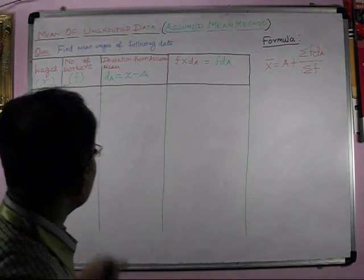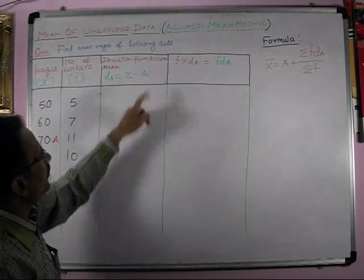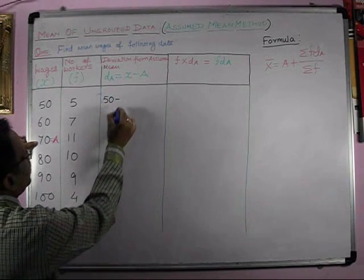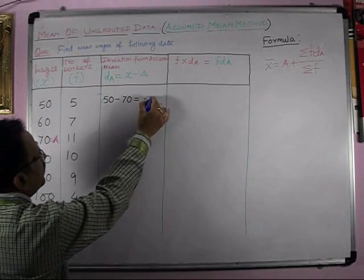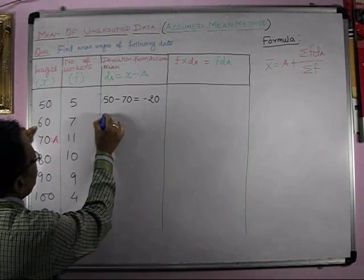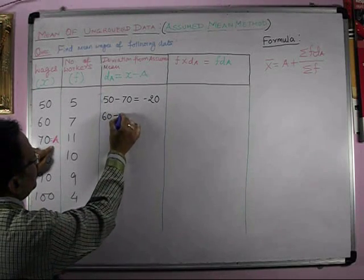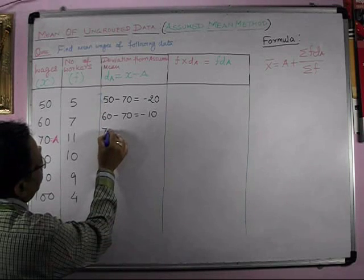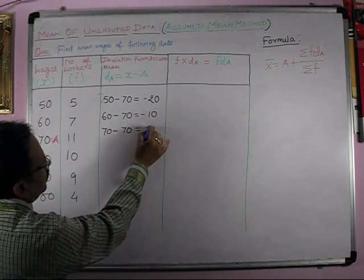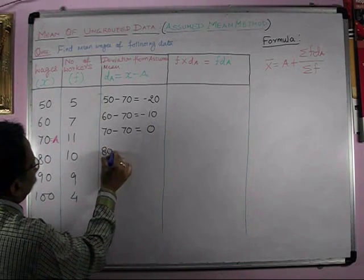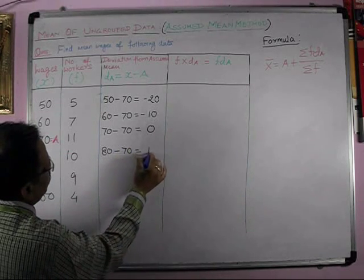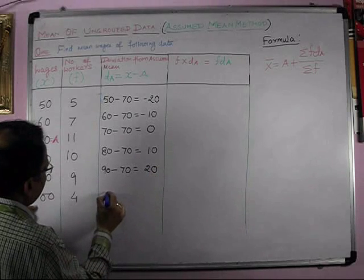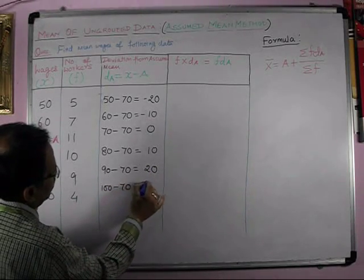Now, we have to find out the deviation from assumed mean, which is DA is equal to X minus A. X is 50, and A is 70. 50 minus 70 is equal to minus 20. X is 60, and A is again 70, we will get minus 10. X is 70, and A is again 70, so we will get 0. 80 minus 70 is 10. 90 minus 70 is 20. 100 minus 70 is 30.